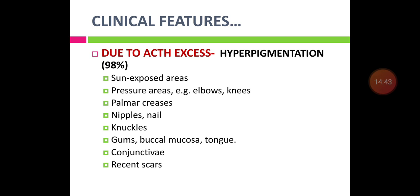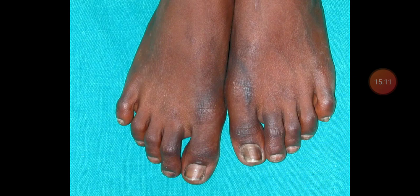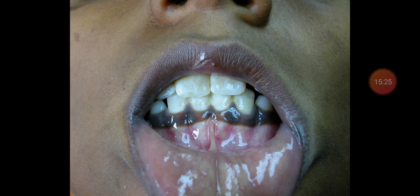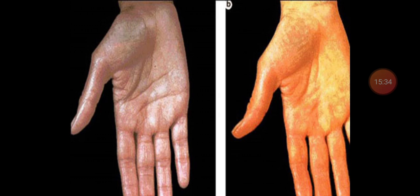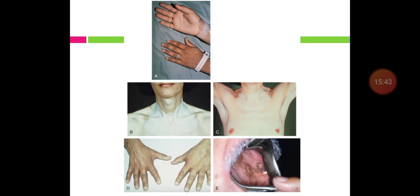Almost 98% of patients present with hyperpigmentation due to excess ACTH secretion. This hyperpigmentation is seen in sun-exposed areas, pressure areas like elbows and knees, palm creases, nipples, nails, knuckles, gums, buccal mucosa, tongue, conjunctiva, and recent scars. Pictures demonstrate hyperpigmentation over the knuckles, gums, buccal mucosa, and palm creases.